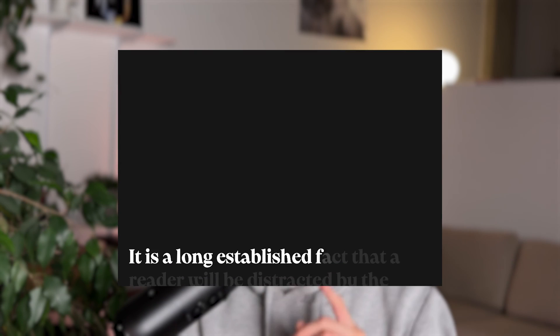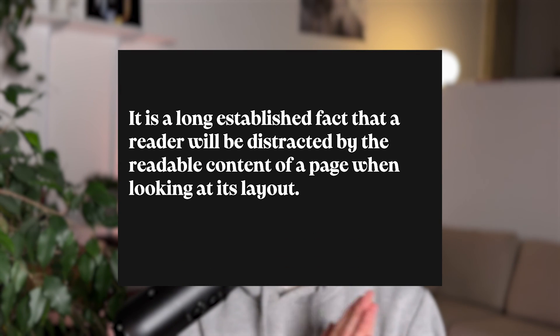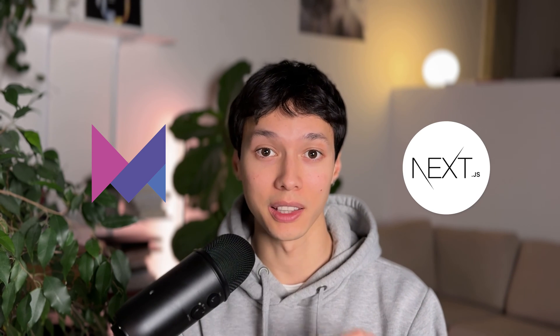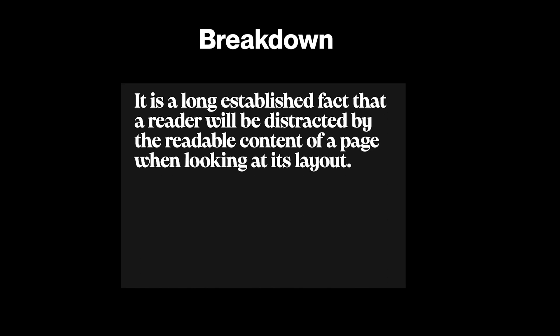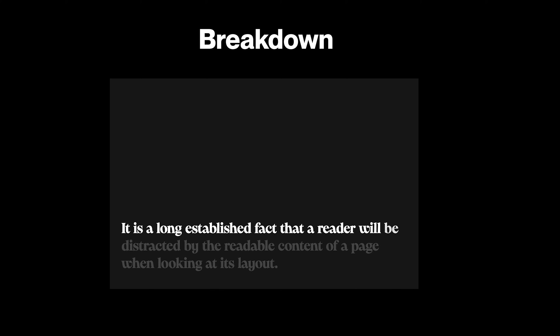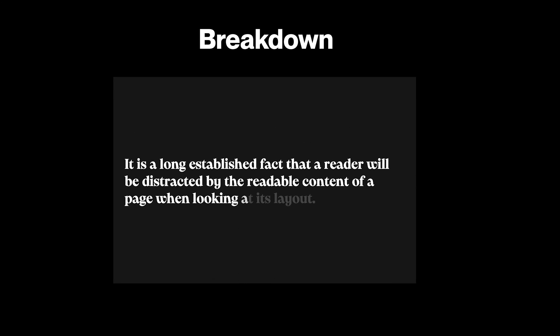This animation must be the most popular animation on award-winning websites. I've remade it in the past using GSAP, but today I want to look at how we can make this using Framer Motion and Next.js. I want to take a look at three variations: one starting with a paragraph animated on scroll, then a word-by-word animation, and finally a character-by-character animation.